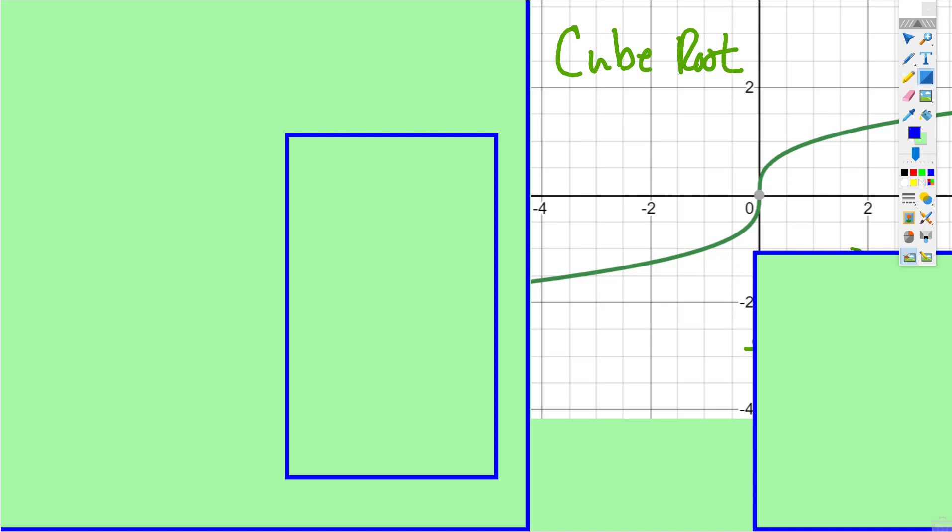The next parent graph that we're going to talk about is the cube root function. The cube root function looks like it's the cubic function turned sideways.